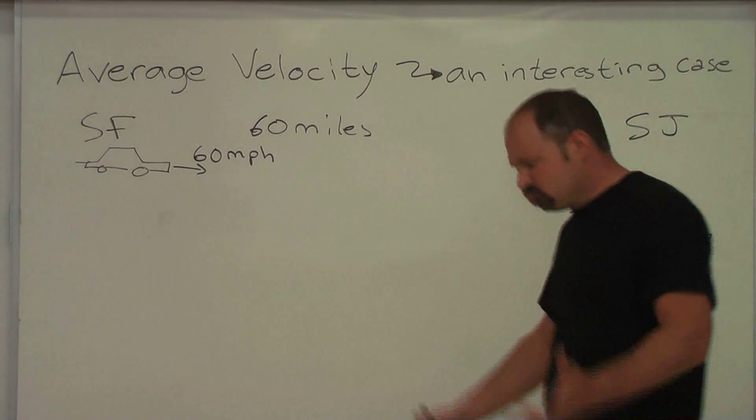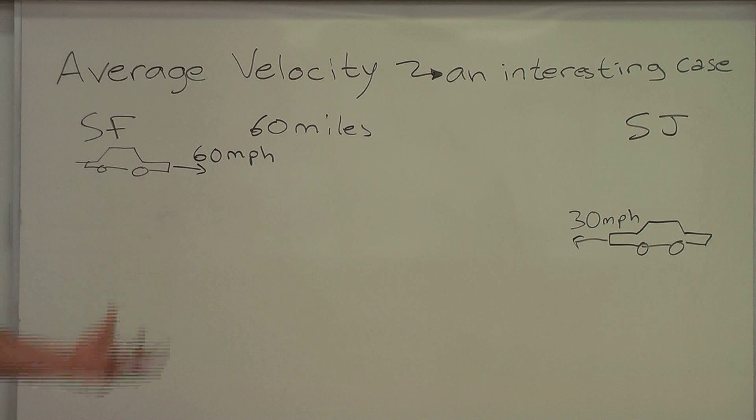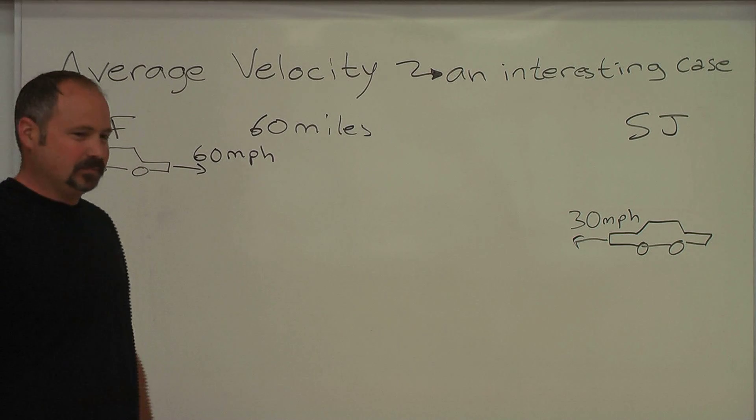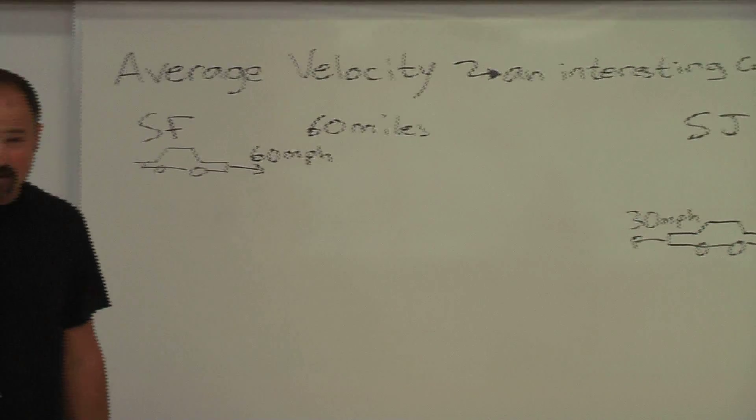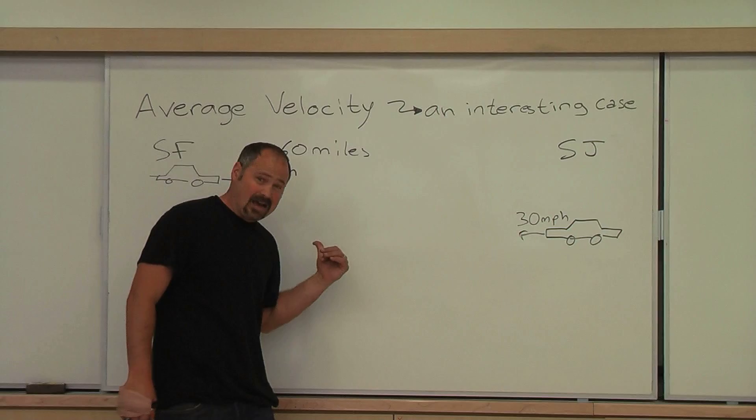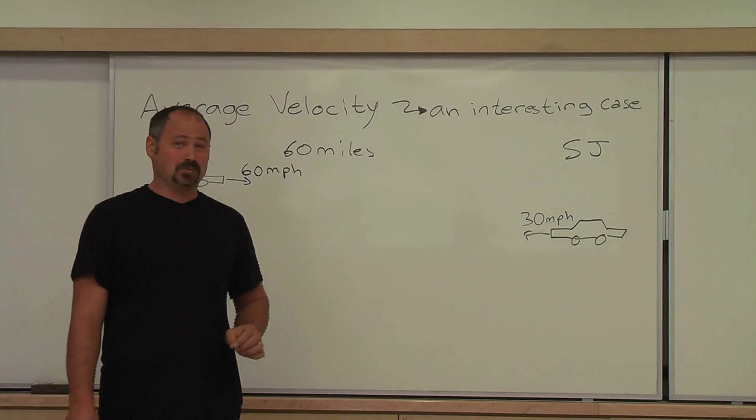And then, at the end of your trip, there in the back, your friend says, well, we averaged 45 miles per hour. It's not correct. Sure, you were going 60 there and 30 back, but the average is not 45 miles per hour.